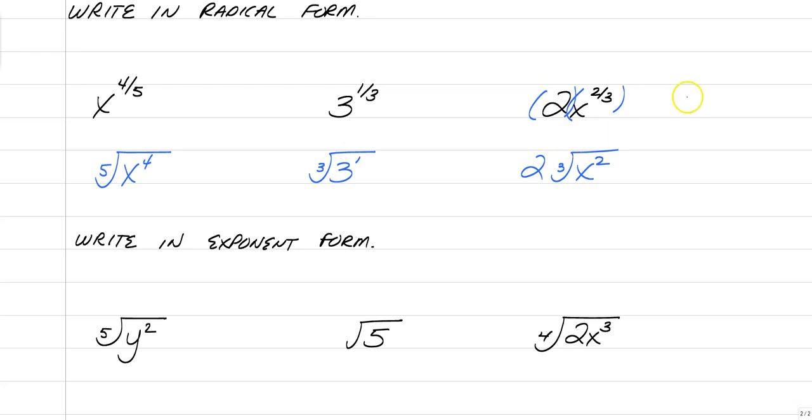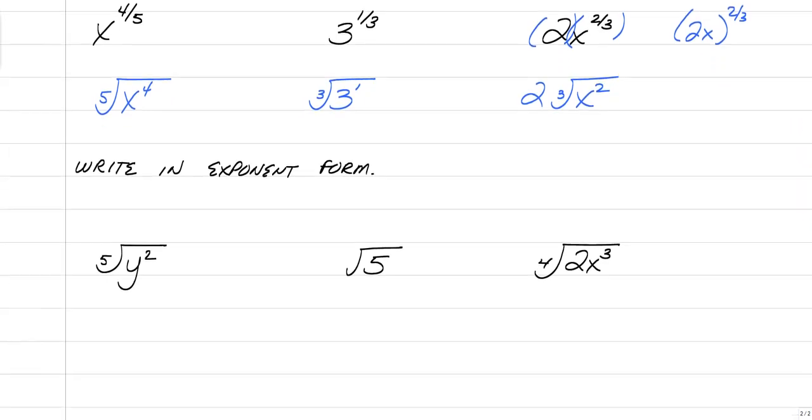Now, if we had that as 2x raised to the 2 thirds power, then the 2 would be inside the radical with a squared. So it would actually be 4x squared cube root of all that. So you have to be careful with old school notation.